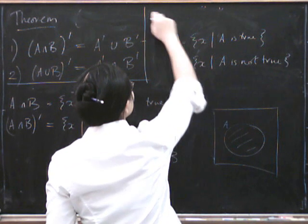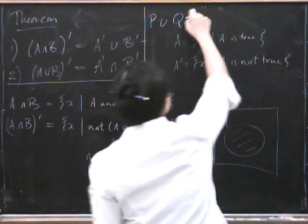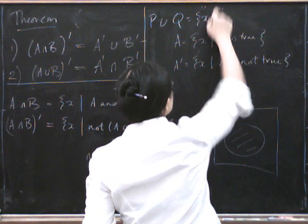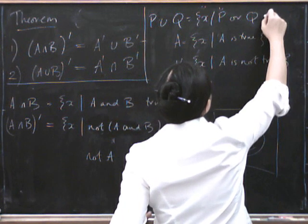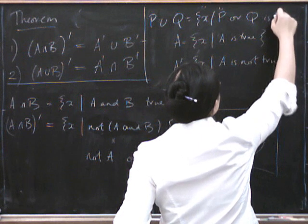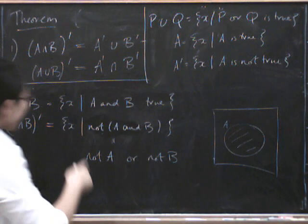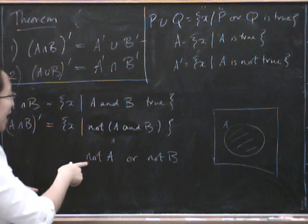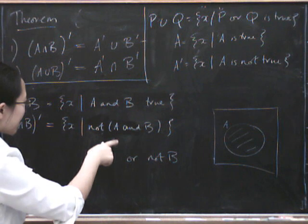So in general, let's do something else: P union Q is all those things such that P or Q is true. So this De Morgan's law is exactly the same as the law about how we negated an AND.